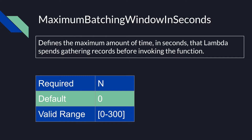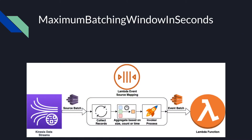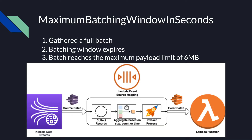Maximum batching window in seconds defines the maximum amount of time in seconds that Lambda spends gathering records before invoking the function. It's not a required parameter — the default is 0 and the valid range is 0 to 300 seconds. Before invoking the function, the event source mapping continues to collect records from a specific shard into a batch until one of three things happen: it has gathered a full batch, the batching window expires, or the batch reaches the payload limit of 6 MB.